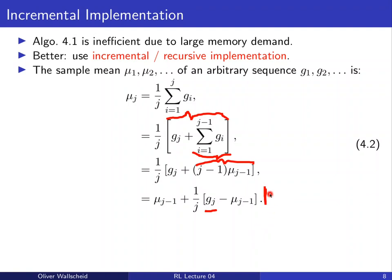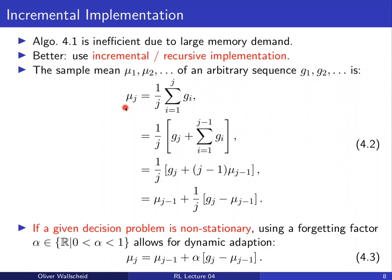This incremental implementation assumes a stationary decision problem — the mean we estimate is constant over time. For a non-stationary problem where the mean changes over time, we modify the weighting: instead of 1/J (number of episodes so far), we use a step-size parameter α (also called forgetting parameter), a real number between 0 and 1, which allows dynamic adaptation for non-stationary decision problems.